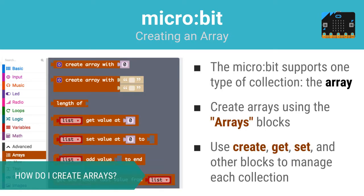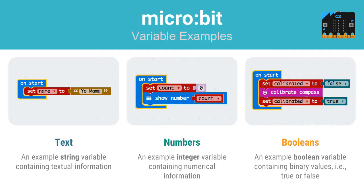The MicroBit not only supports the ability to create single value text, number, and Boolean variables, it also supports one collection type, the array. Using the arrays tray, you can create an array with as many common items as you like. You can set and get the values of each item using the provided blocks.